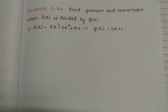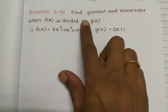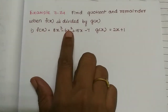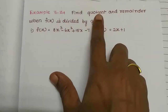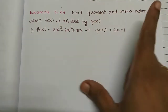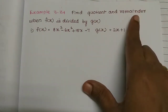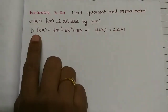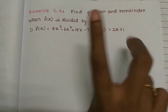Hi students, in this video let's look at example 3.34. Find quotient and remainder when f of x is divided by g of x. So to find quotient and remainder, we use the long division method. We are going to divide f of x by g of x.